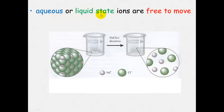In an aqueous or liquid state, however, the ions are free to move around. If you put salt into water, these particles will move apart from one another and the ions are free to move. The same thing happens if you melt it — if you turn it into a liquid, the particles are able to move. But in a solid state, they are unable to move.